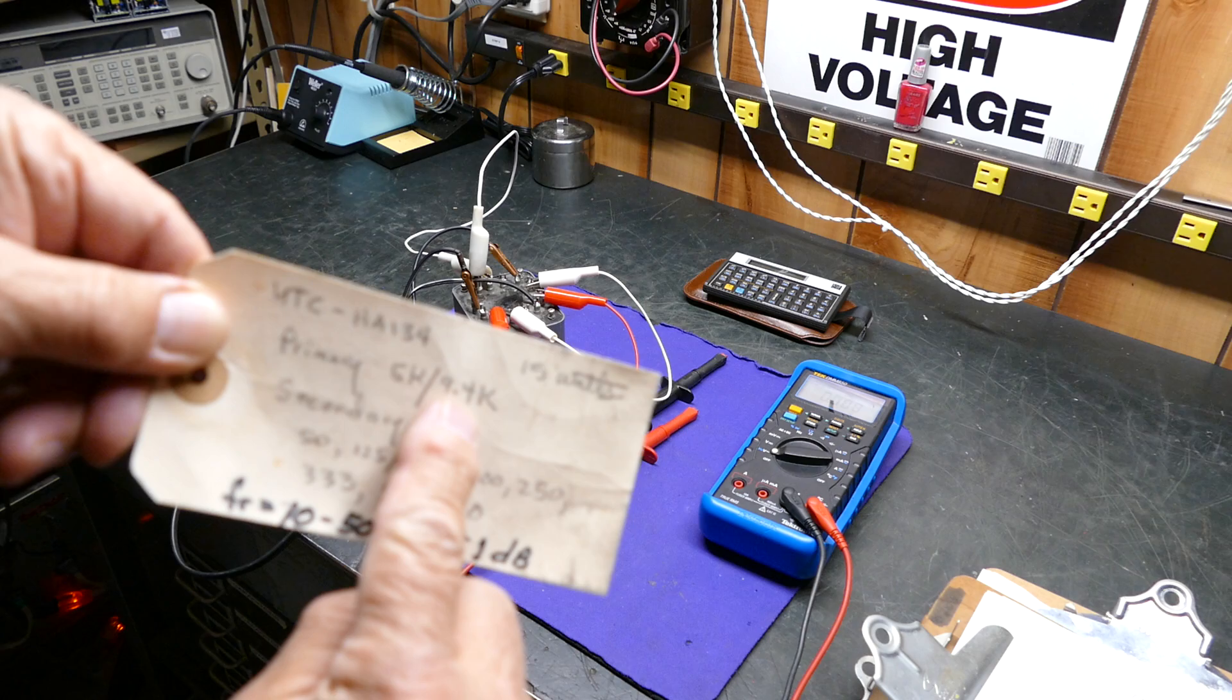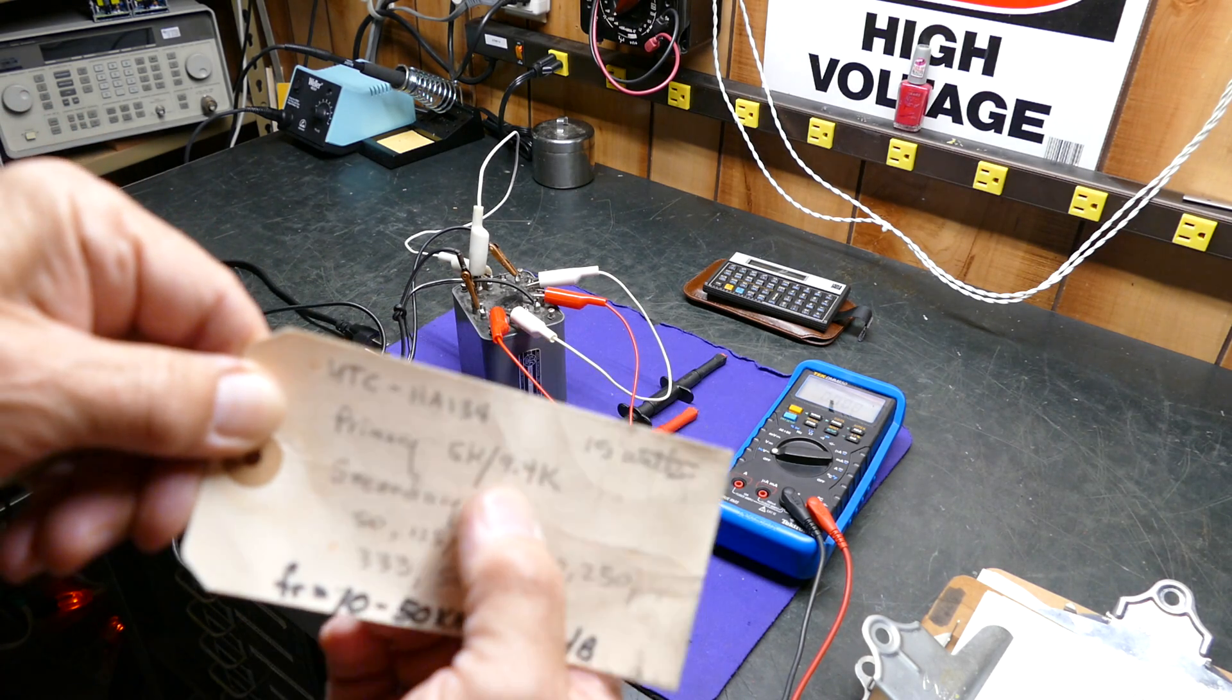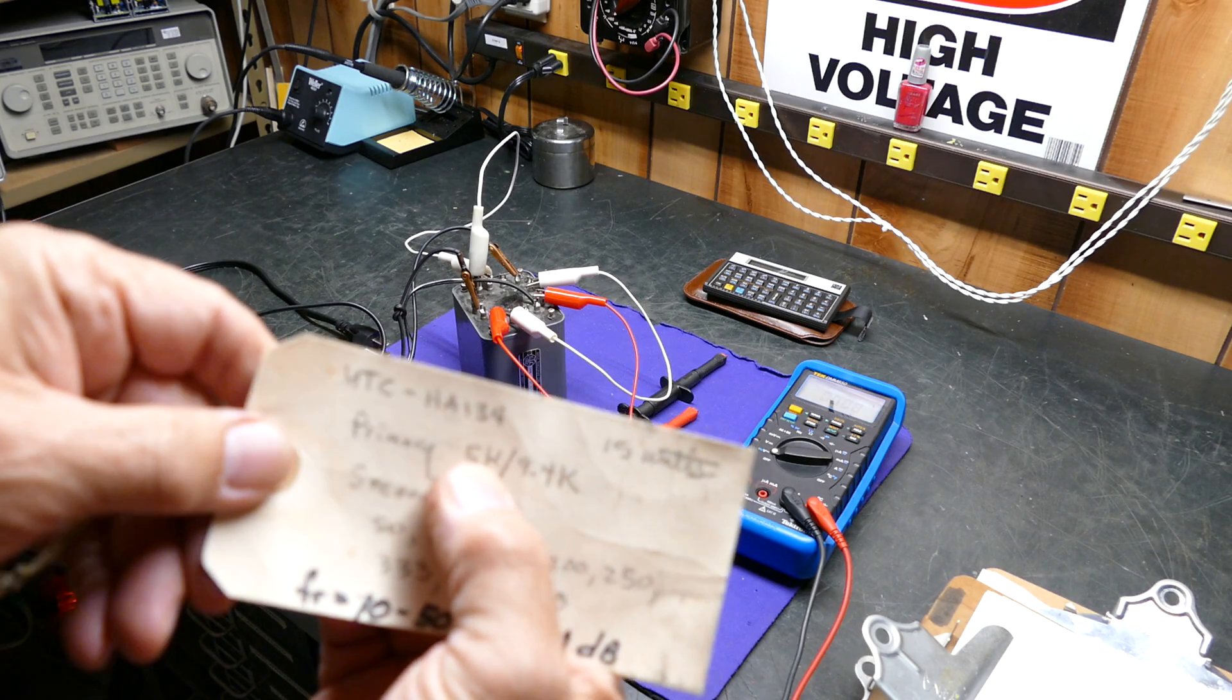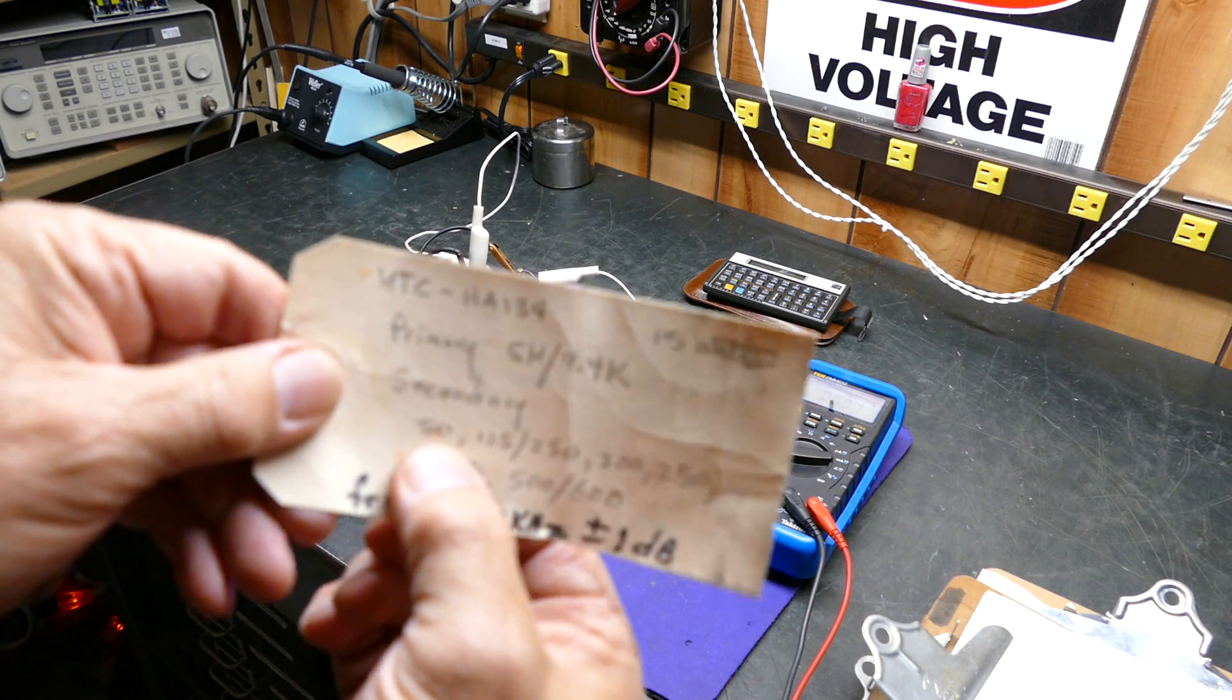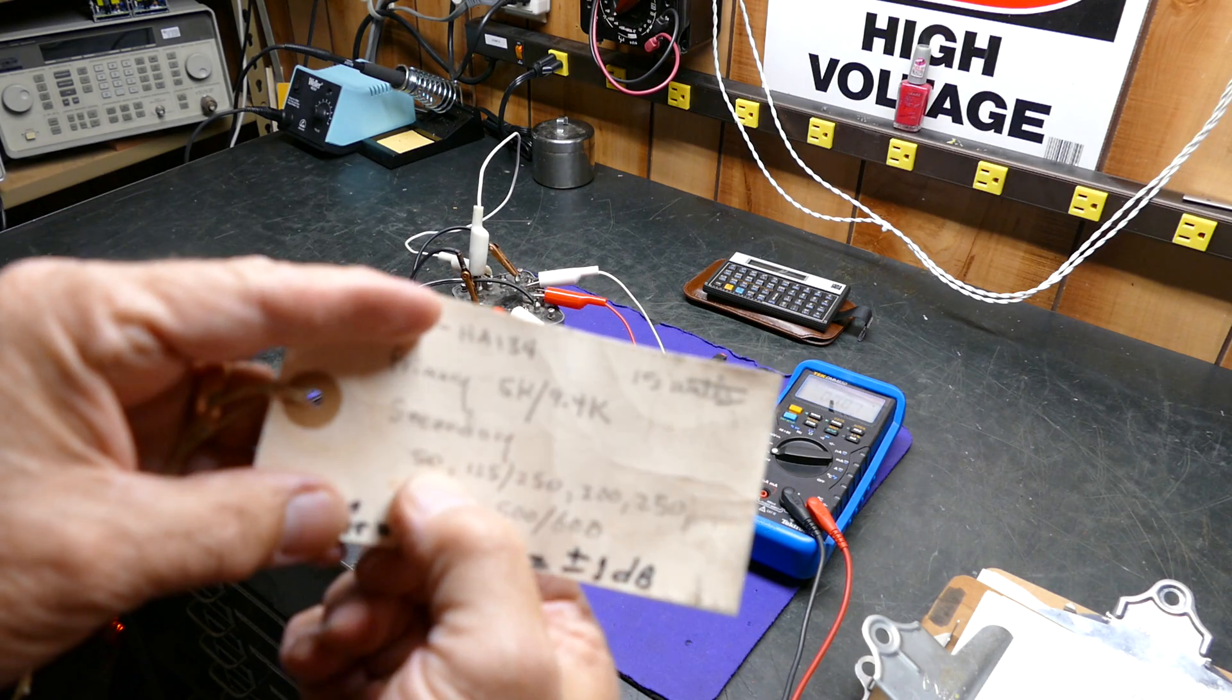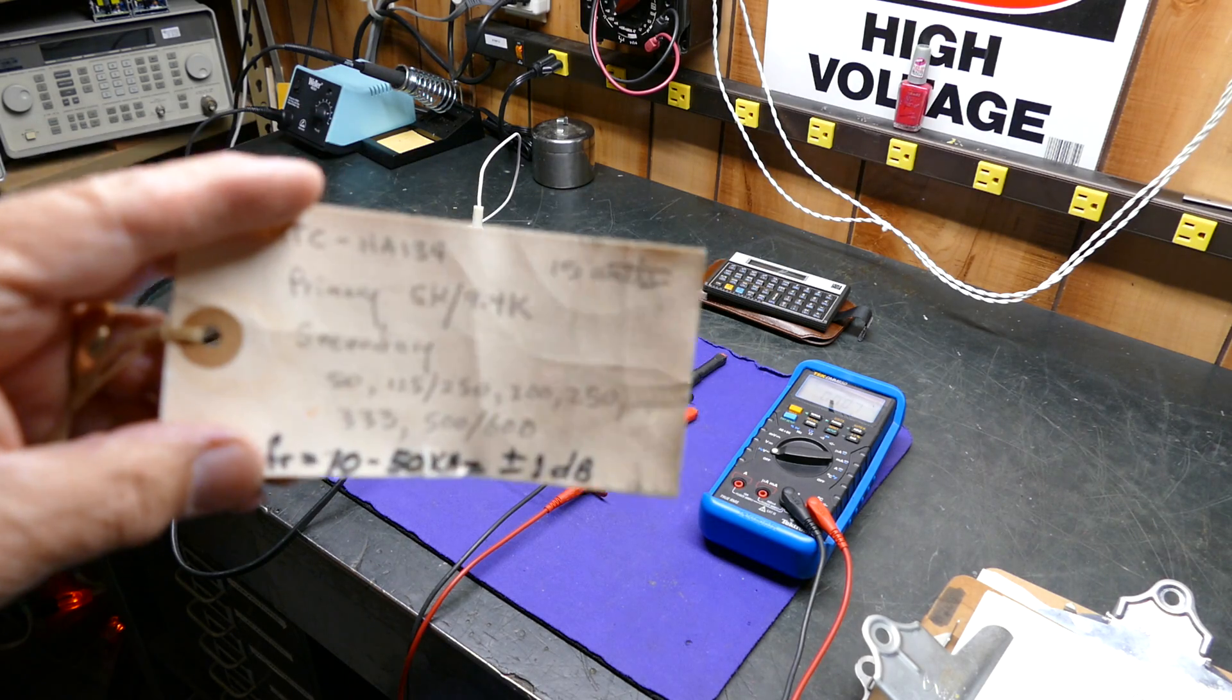The primary is either 5K or 9.4K. If you look in the UTC catalogs, you'll see they're rated at 5K and 10K. The problem with it is here are its secondary impedances: 50 ohms, 125, all these crazy ones. Well, we don't want that. We want 8 ohms, don't we?